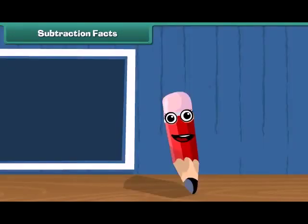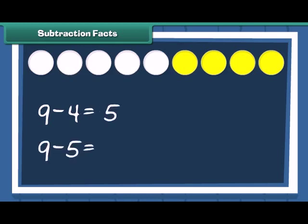Let me tell you about subtraction fact. We have 9 circles. Out of these, if 4 circles are colored, how many white circles are left? Thus, we have 9 minus 4, which is equal to 5 and 9 minus 5, which is equal to 4.